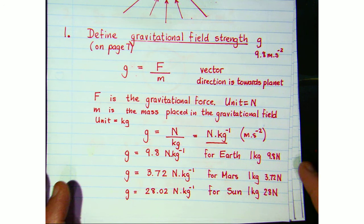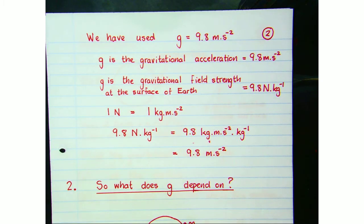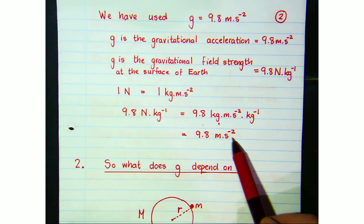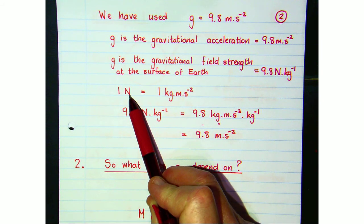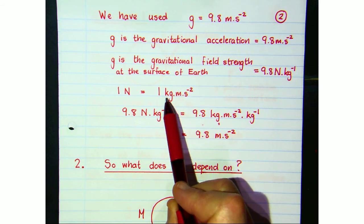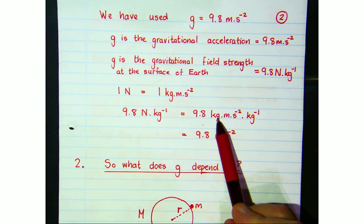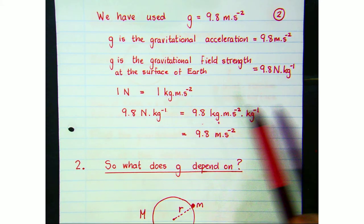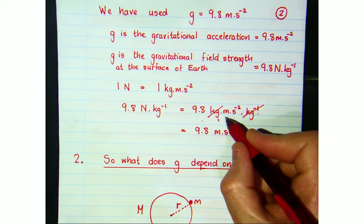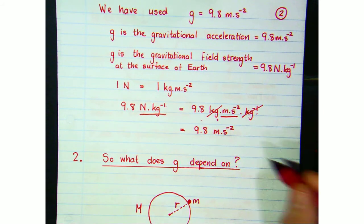Let's show that the newton per kilogram is identical to the meter per second squared. We know that the newton equals mass times acceleration, so it has units of kilogram·meter per second squared. If we replace the newton with that unit in newtons per kilogram, the kilograms cancel and we're left with meters per second squared. So newton per kilogram is an equivalent unit to meter per second squared.